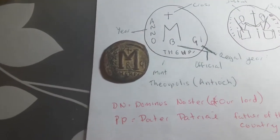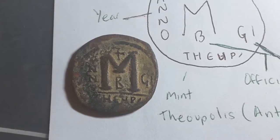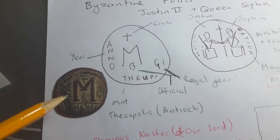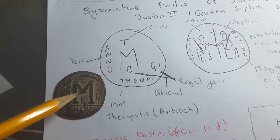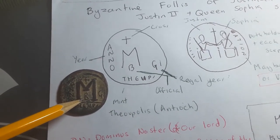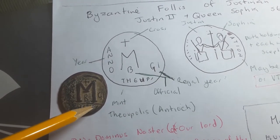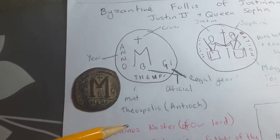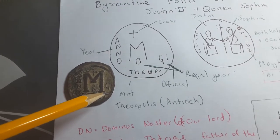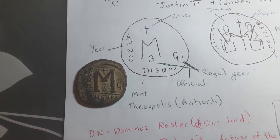Here I have a follis or 40 nummi of Justinian the Second, and I'll show you how to read it. I have a diagram up here - the M represents the denomination, 40 follis. Here is the officina, just means yeah. Here is B. Here is the field: T-H-E-O, that's a U there, which means Theopolis, which is Antioch, currently in Turkey. You have a cross up top which stands for Christianity, and here the GI is the regnal year, most likely six in Greek.